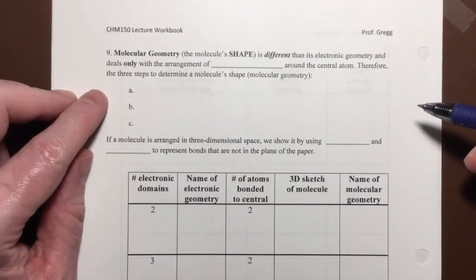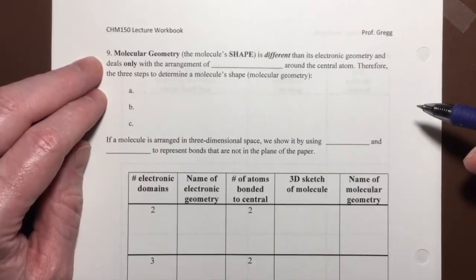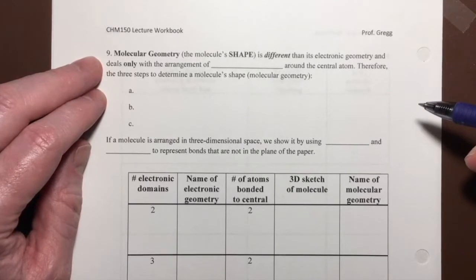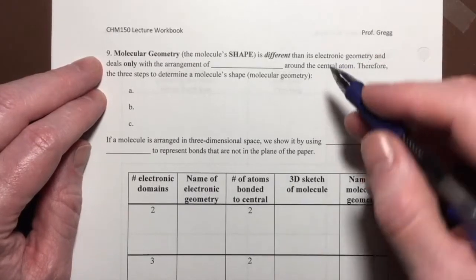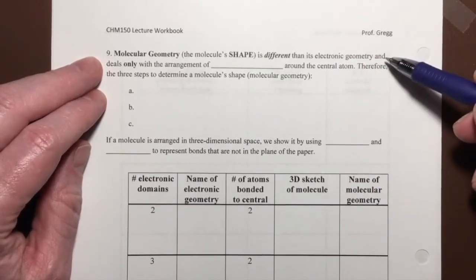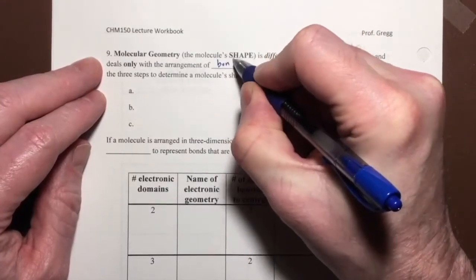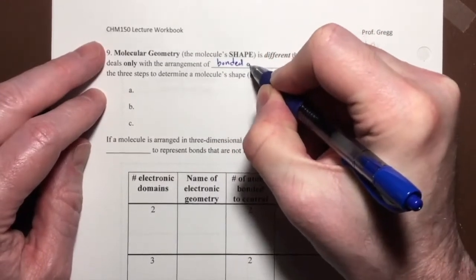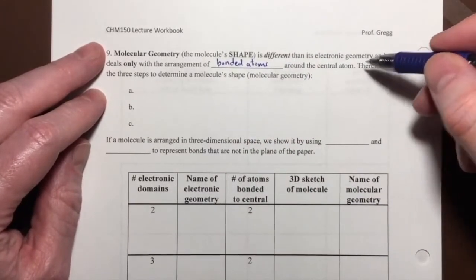The next step is to talk about molecular geometry, or the molecule's shape. It's very similar in concept but still different from the electronic geometry, because the molecular geometry only deals with the arrangement of the bonded atoms around the central atom.